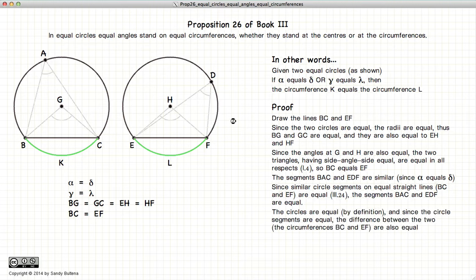Now, we started with equal circles. If we have equal circles, and we're subtracting off an equal circumference,